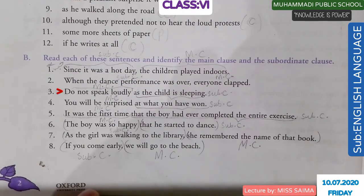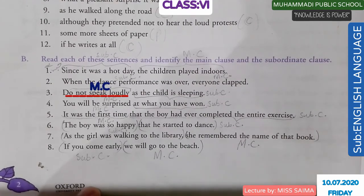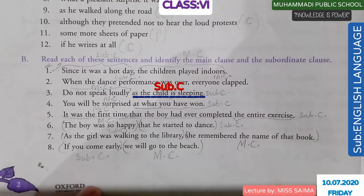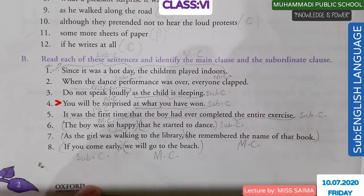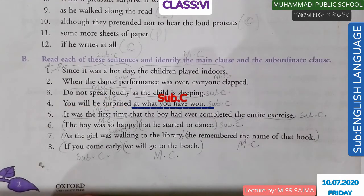Sentence 3: 'Do not speak loudly as the child is sleeping.' 'Do not speak loudly' is the main clause and 'as the child is sleeping' is the subordinate clause. Sentence 4: 'You will be surprised at what you have won.' 'You will be surprised' is the main clause and 'at what you have won' is the subordinate clause.